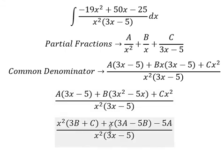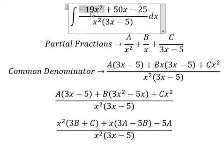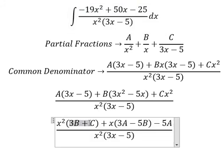Now we need to compare coefficients. For x squared we have negative 19, so this equals negative 19. For x we have 3A minus 5B and we have 50, so this equals 50. And the last one equals negative 25.